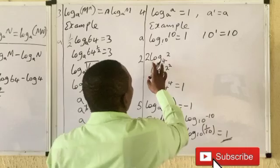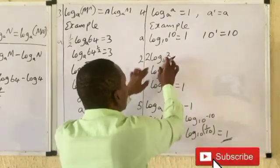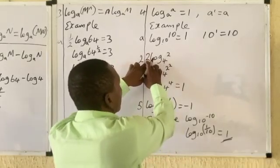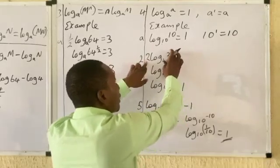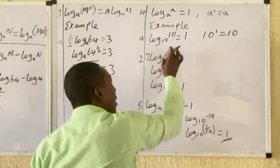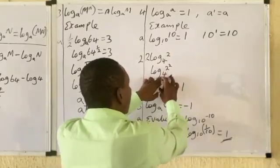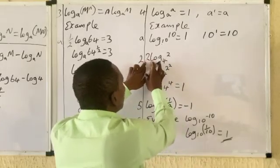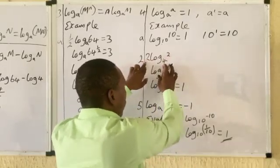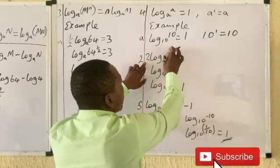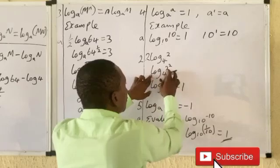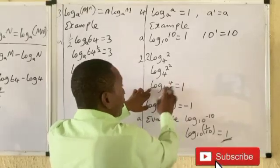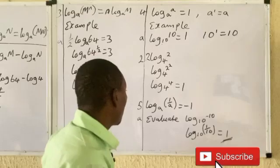Let's look at a second example: 2 log base 4 of 2. Because of the coefficient 2 at the front, we move it as a power of 2, giving log base 4 of (2 raised to power 2). 2 raised to power 2 equals 4, so we have log base 4 of 4, which equals 1.